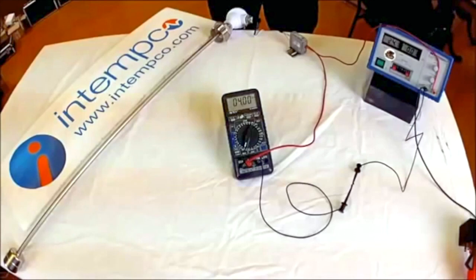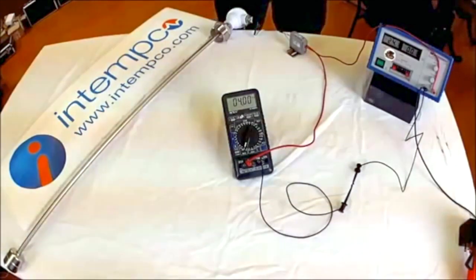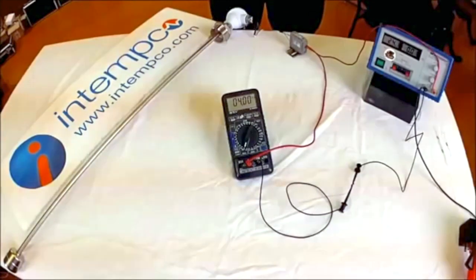For the purpose of this demonstration, we will be using an Intemco float level sensor. This sensor changes resistance with a change in float position. Attached to the sensor head is a transmitter that converts that resistance into a 4 to 20 milliamp current signal.